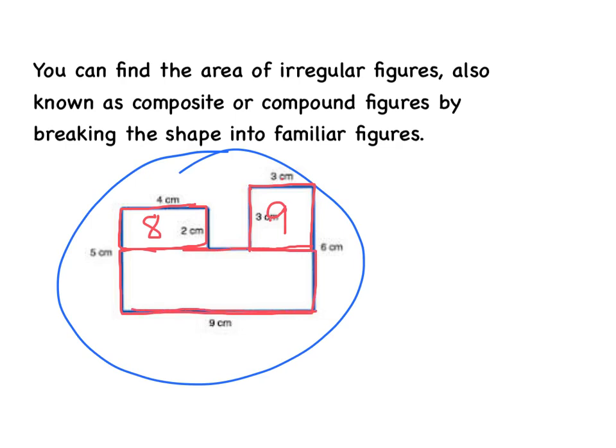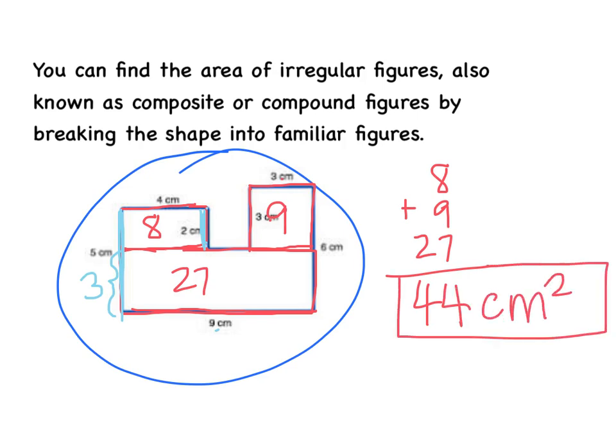This is 9 units here. And then notice that, let me get a different color. Notice that this whole side is 5 centimeters, and then from here to here is 2 centimeters. So that means that the remaining part right here must be 3 centimeters. So this would be 3 by 9, which is 27. So then all I have to do is add 8, 9, and 27 to get 44 centimeters squared. So that's the area of the entire figure.